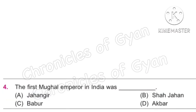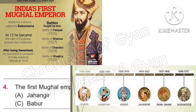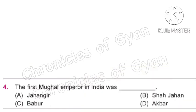Question 4: The first Mughal emperor in India was? Please refer to the added information for your upcoming exam. The correct answer is Option C: Babur.